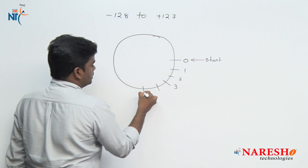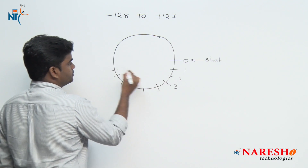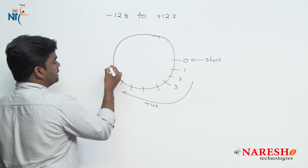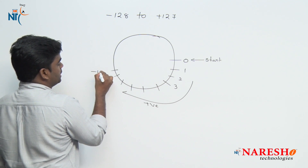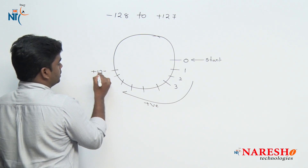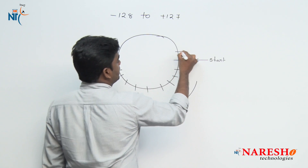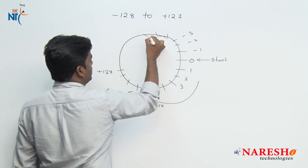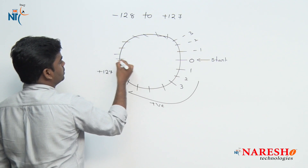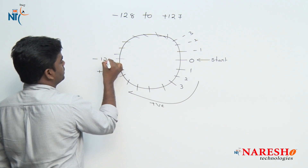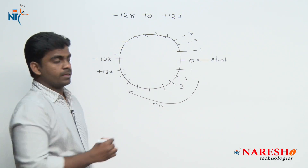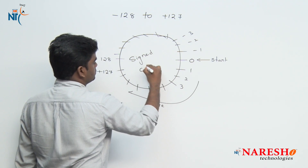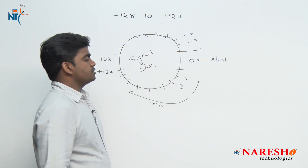Positive values count in a clockwise direction, and the maximum positive value is 127. Negative values counting starts with minus 1, minus 2, minus 3 and so on up to minus 128. This is the signed character circle.